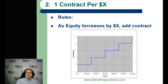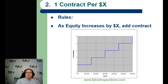Number two is trading one contract per a certain amount of equity — in this case fifteen thousand dollars. For every fifteen thousand dollars of equity you increase the size by one, so by the time you get to sixty thousand you're trading five contracts. This kind of scales up as your equity goes up, so a lot of people like it for that reason.